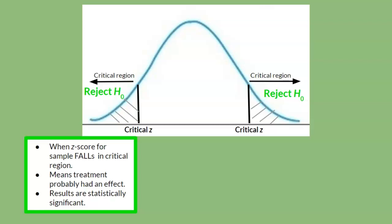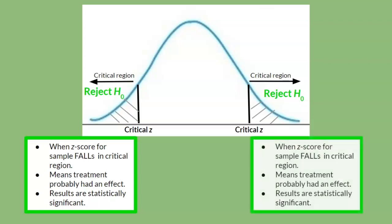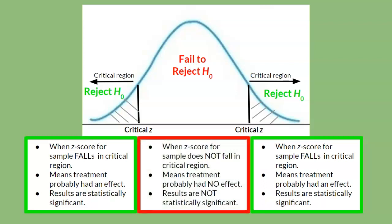Since this is a normal distribution, and a normal distribution is symmetrical, whatever happens on one side will also happen on the other side. Now, if the z-score for the sample in Step 3 does not fall in the critical region, but in the middle of the graph, then the decision is to fail to reject the null hypothesis, which is red. In other words, the study probably did not work. More specifically, the treatment given to the sample probably had no effect. And in more technical terms, we would state that the results are not statistically significant.